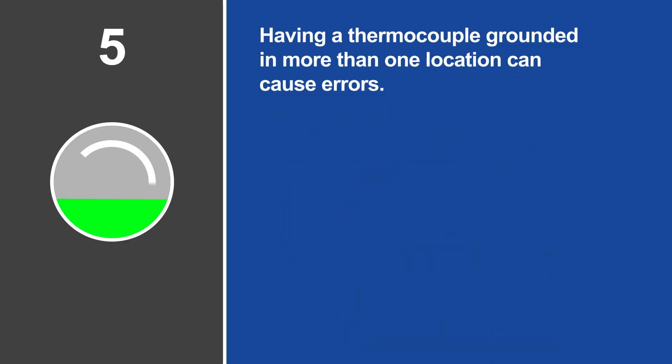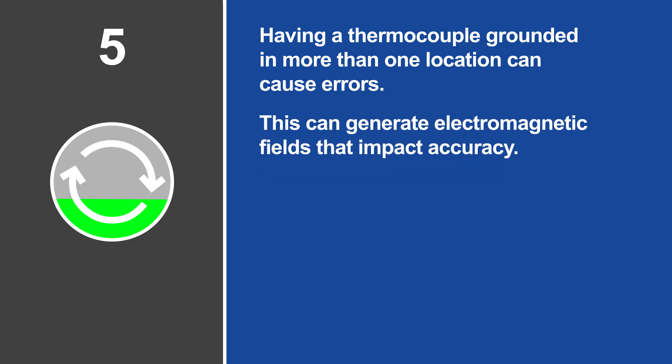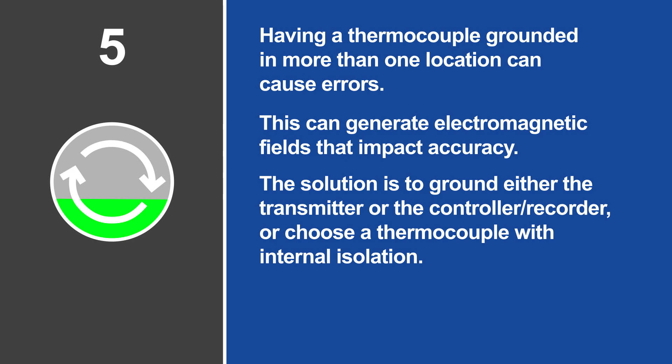Having a thermocouple grounded in more than one location can cause errors. When this happens, a ground loop can occur, causing electricity to flow around the loop. This can generate electromagnetic fields that impact accuracy. The solution is to ground either the transmitter or the controller recorder, or choose a thermocouple with internal isolation. Loop isolators can also prevent this from happening.